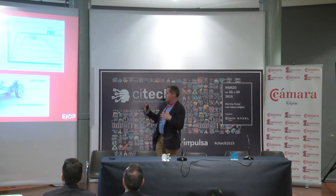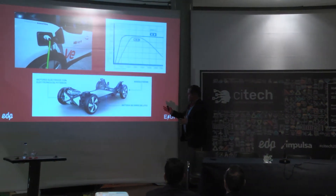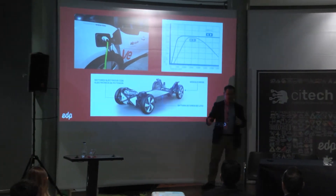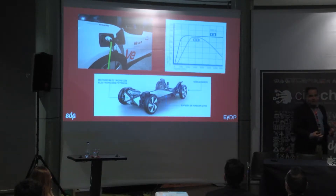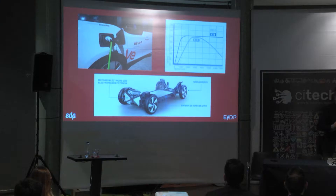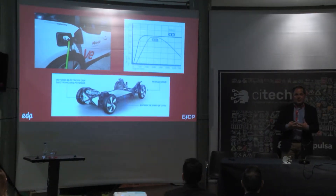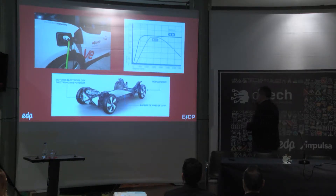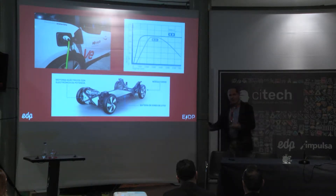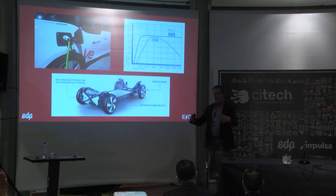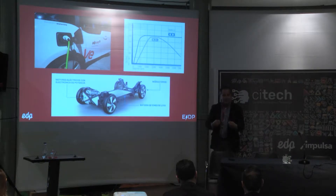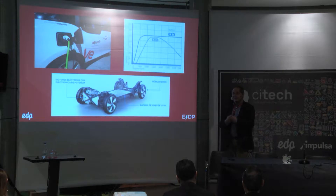El coche se transforma radicalmente. Aquí vemos un BMW i3 y vemos que todo el suelo del coche es la batería. El reto del coche eléctrico es conseguir cada vez más autonomía: baterías que en el mismo espacio almacenen la máxima cantidad de energía posible. Cuanto más evolución haya en materiales y tecnología de almacenamiento, conseguiremos mayor densidad energética. El peso también es crítico, porque cuesta más transportar las cosas cuanto más peso tienen. Cuanto más logremos aligerar el coche, más ganamos en autonomía.